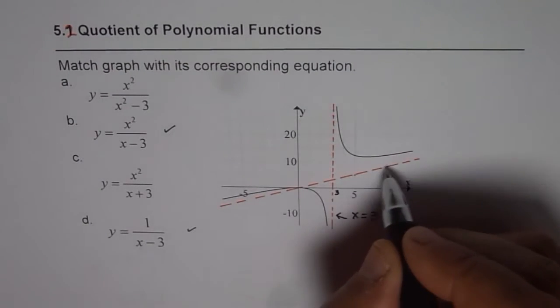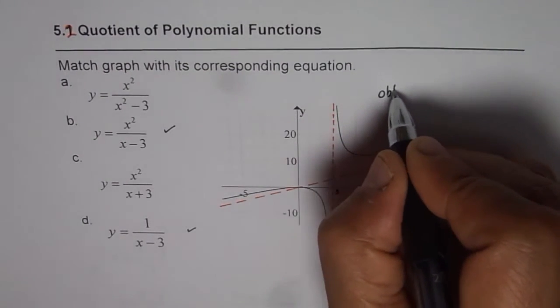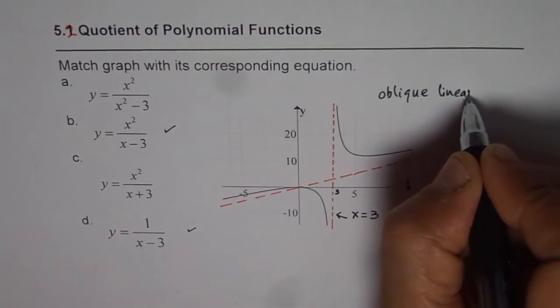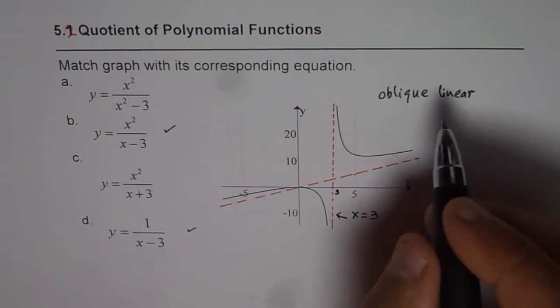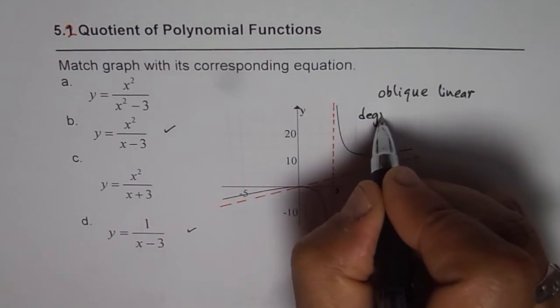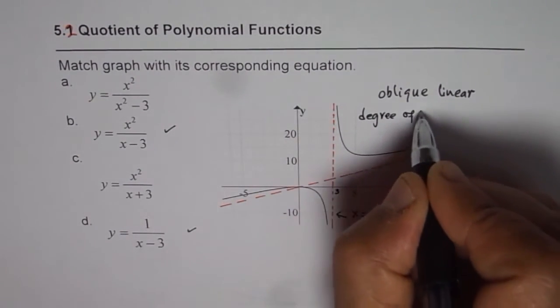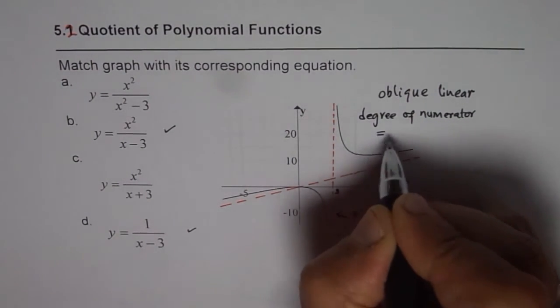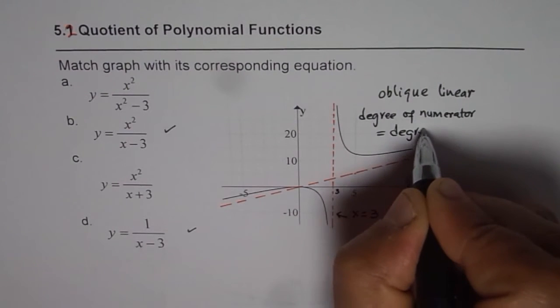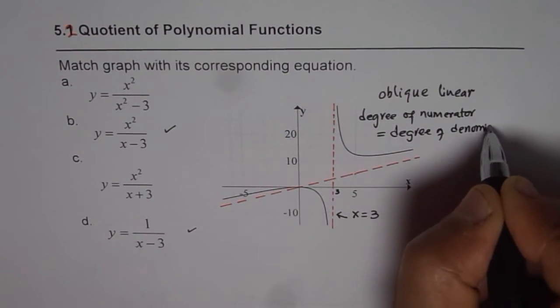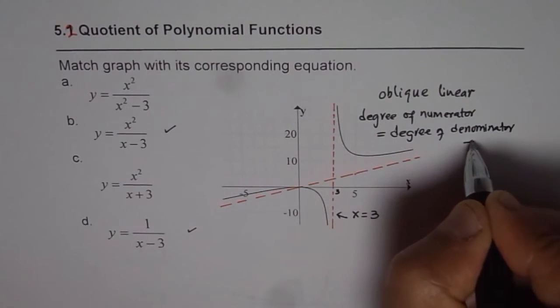The second part is that we have an oblique asymptote. We have oblique linear asymptote. Since it is oblique, degree of numerator should be 1 higher. We have degree of numerator equals to degree of denominator plus 1.